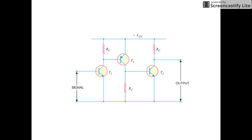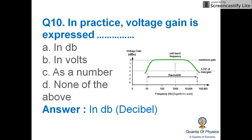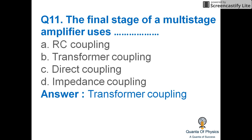Transformer coupling provides the maximum voltage gain — here is the transformer coupling circuit diagram. In practice, voltage gain is expressed in decibels. The final stage of a multi-stage amplifier uses transformer coupling.